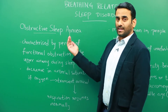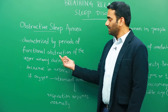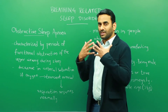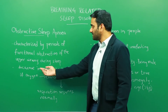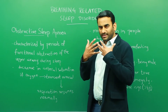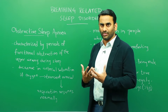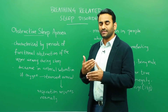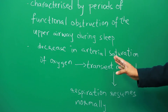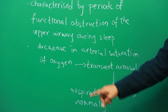Obstructive sleep apnea is characterized by periods of functional obstruction of the upper airway during sleep. The obstruction causes a decrease in the arterial saturation of oxygen. Because breathing is reduced, oxygen saturation decreases, which causes transient arousal of the patient, which again results in respiration resuming normally.